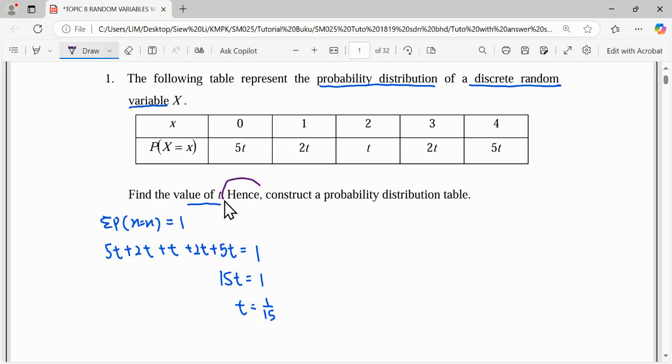Hence, hence means we continue with this value t is 1 over 15. So this one we all substitute t as 1 over 15. Here we need to construct the probability distribution table. Means we need to build out the table again with the complete value of the probability. So therefore, our x will be the first row. Then second row will be our probability.